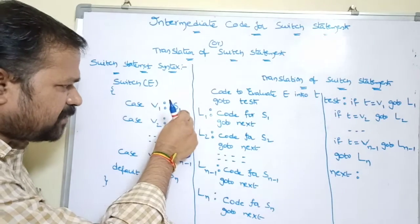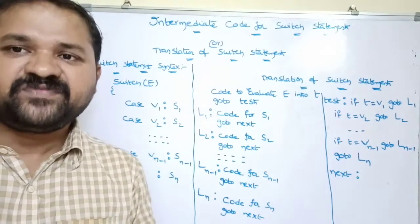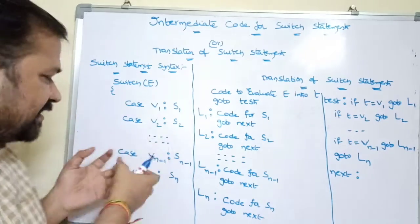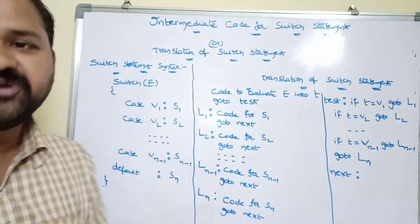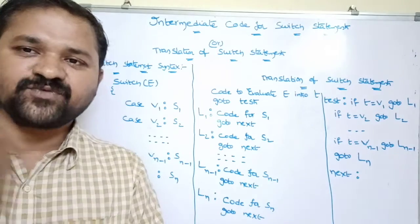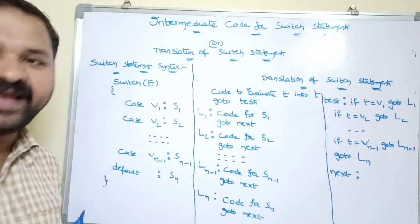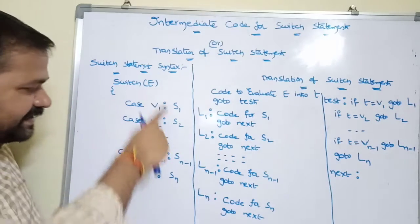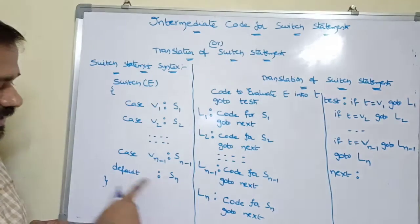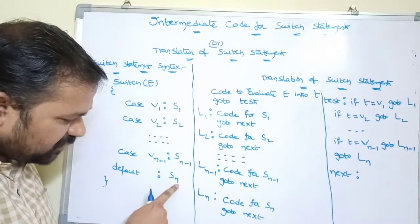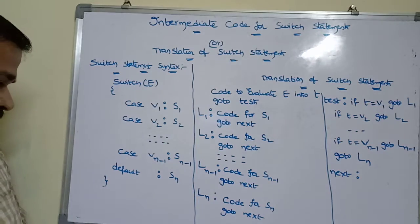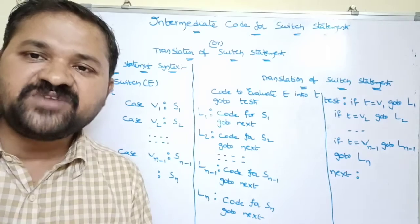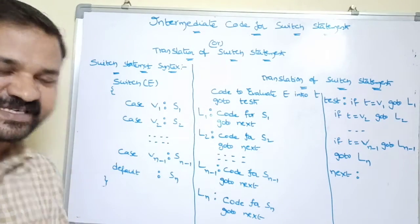After each statement block, we may use a break statement. If we don't use break, the remaining cases will also be executed. If you want to execute multiple choices, there's no need for break. But if you want only one choice, use break after the statements — the control then exits the switch. If the expression doesn't match any case value, the default block is executed. Default is optional, not compulsory.